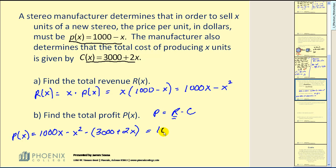Simplifying, we have minus 3000 minus 2x. Combining our like terms, our profit function would equal negative x squared plus 998x minus 3000.